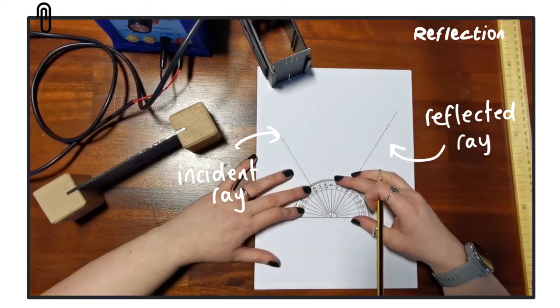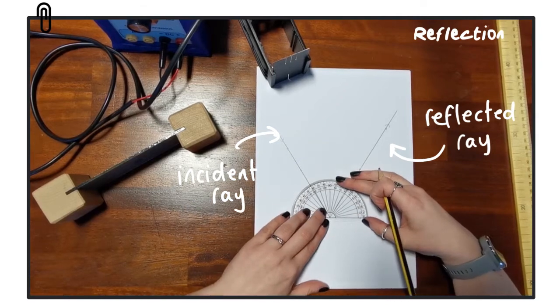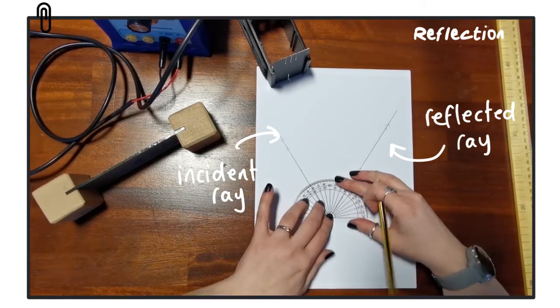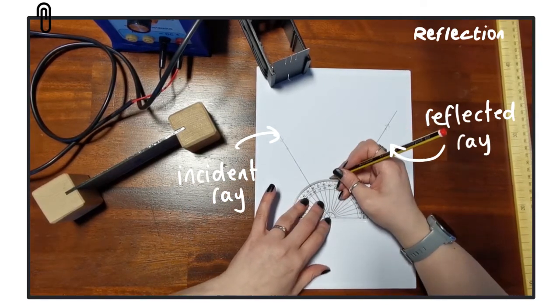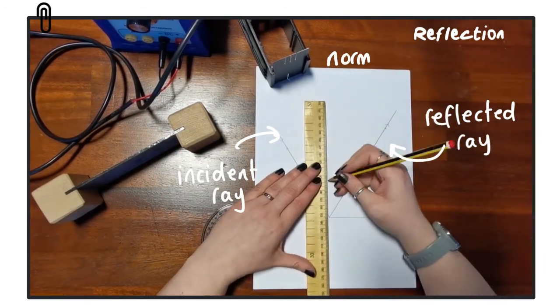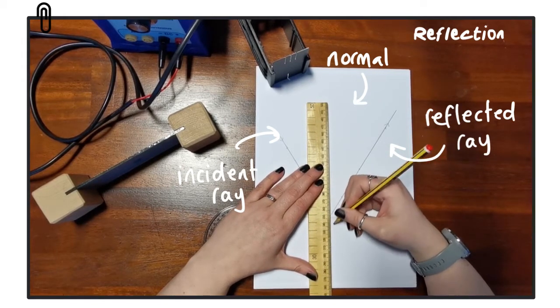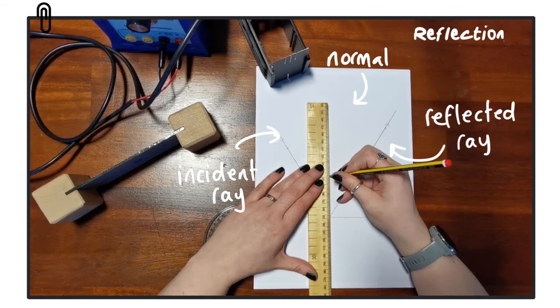So we want to measure some angles and we're going to need a protractor for that. We're also going to need to add on a line that wasn't actually there. This line is called the normal, and the normal is drawn at 90 degrees to the boundary. This normal is important because it allows us to measure some key angles.